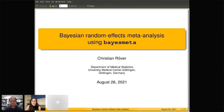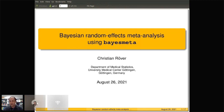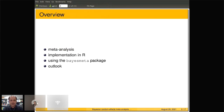He will be presenting today: Bayesian random effects meta-analysis using bayes meta. Thanks for the kind introduction. I'm going to talk about the bayes meta package for Bayesian random effects meta-analysis. I'll first briefly introduce the problem, then how it's implemented in R and how you can use the package, and then close with some outlook and future plans.